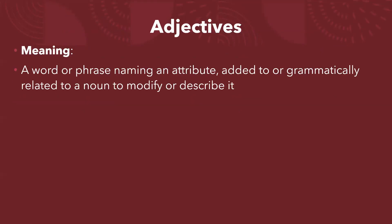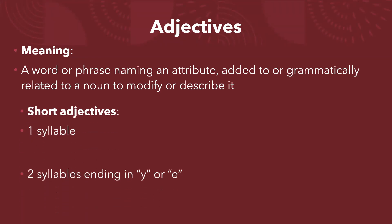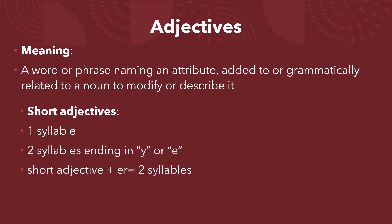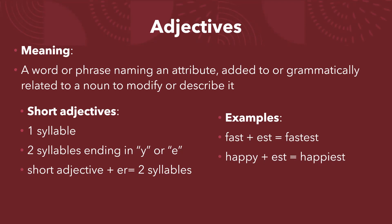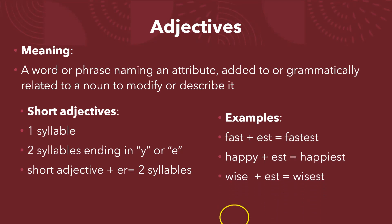Now, adjectives. Adjectives are words or phrases naming an attribute added to or grammatically related to a noun to modify or describe it. For short adjectives — one syllable, or two syllables ending in Y or E — you form the superlative by adding E-S-T. For example: fast → the fastest, happy → the happiest, wise → the wisest.